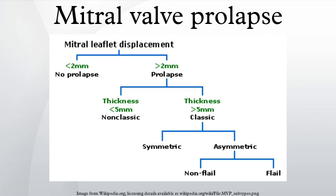This weakens the leaflets and adjacent tissue, resulting in increased leaflet area and elongation of the chordae tendineae. Elongation of the chordae tendineae often causes rupture, commonly to the chordae attached to the posterior leaflet. Advanced lesions also commonly involving the posterior leaflet led to leaflet folding, inversion, and displacement toward the left atrium.